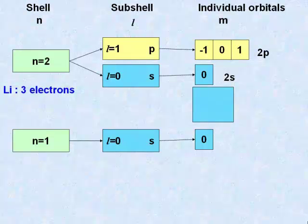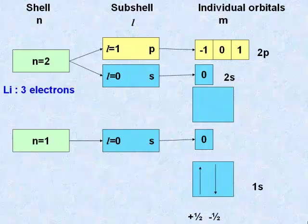We can fill the 1s orbital with two electrons of opposite spin. And they will have different combinations of the four quantum numbers. So, all is well thus far.